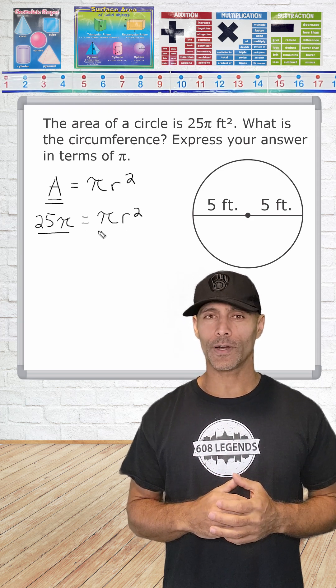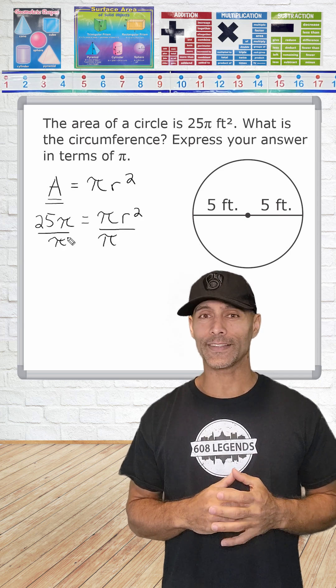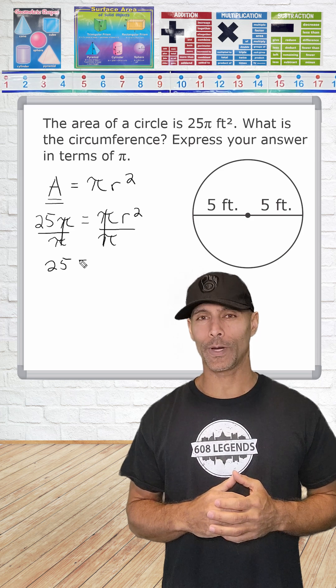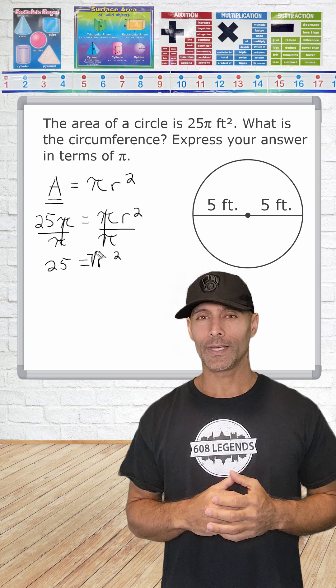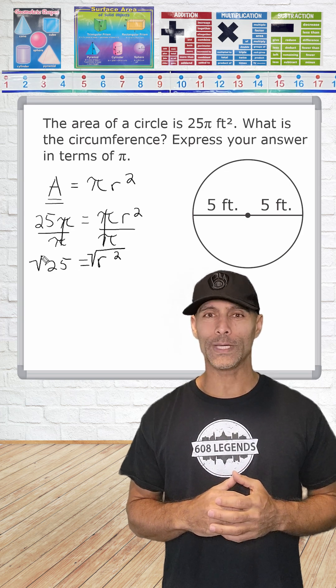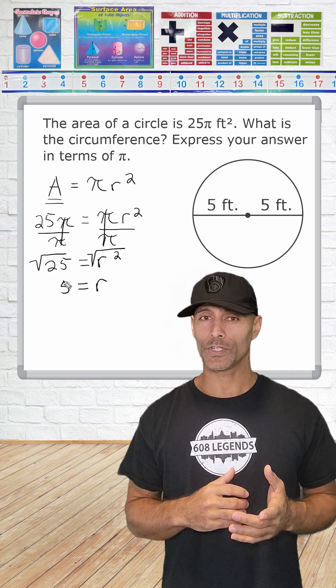To solve for r, we start by dividing both sides by π. This will cancel out π on both sides, leaving us with 25 is equal to radius squared. Now, the inverse of squaring something is the square root. By taking the square root of both sides, we isolate the r and determine what the value of r is equal to, which in this case is 5.